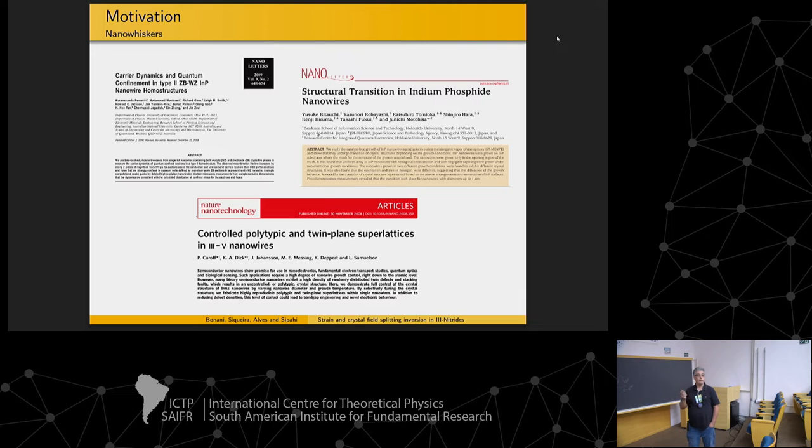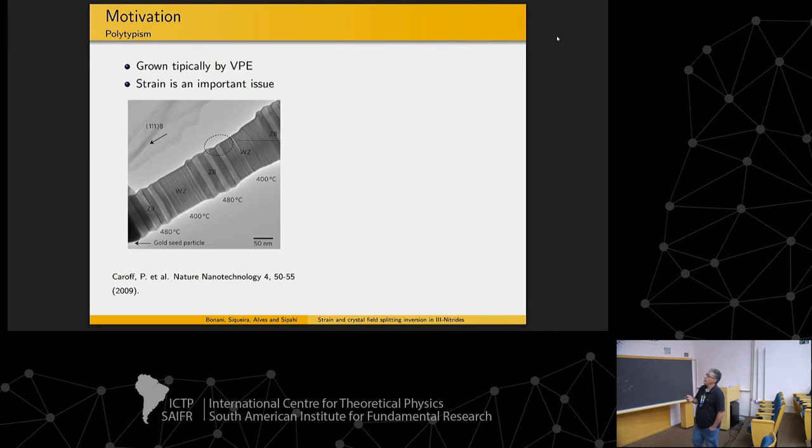What is interesting about these nanowires is that they have a coexistence of both phases. So we can have wurtzite and zinc blend structures coexisting, and this is a nice feature for us to understand. So that's the nanowire.